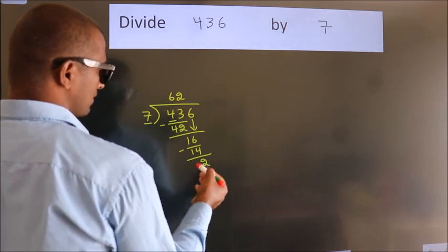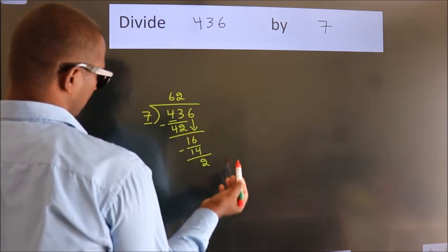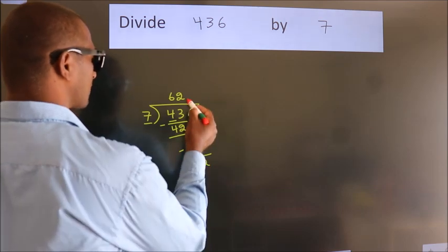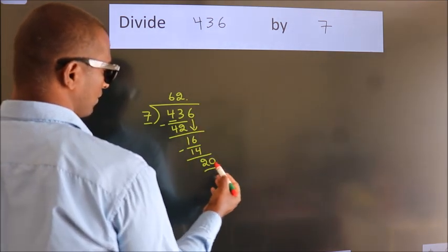After this, no more numbers to bring it down. So, what we do is we put dot take 0. So, 20.